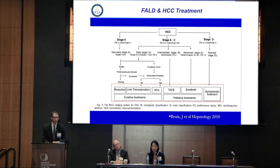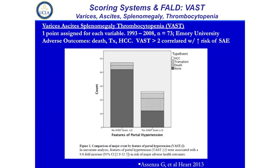To wrap up with how we score or stratify these patients — this is the VAST study from Emory, in which one point is assigned to patients who either develop varices, ascites, or splenomegaly with thrombocytopenia that occurs from splenic sequestration. Patients with VAST scores greater than 2 had a significantly higher number of adverse outcomes such as HCC, the need for transplant, or mortality, versus patients with VAST scores less than 2. So it's a clinically useful tool for us.